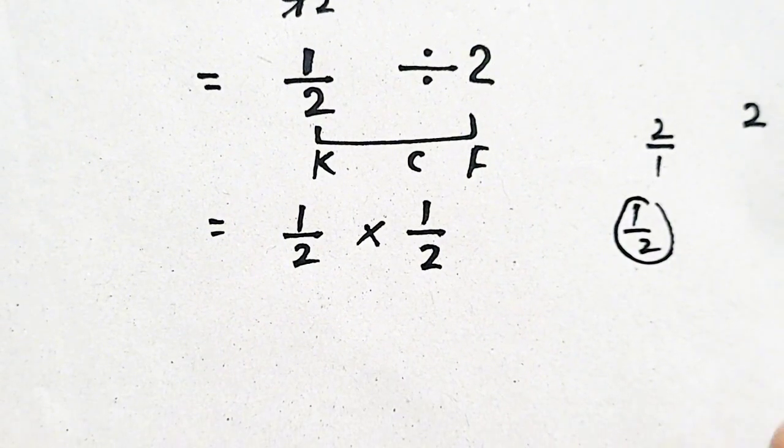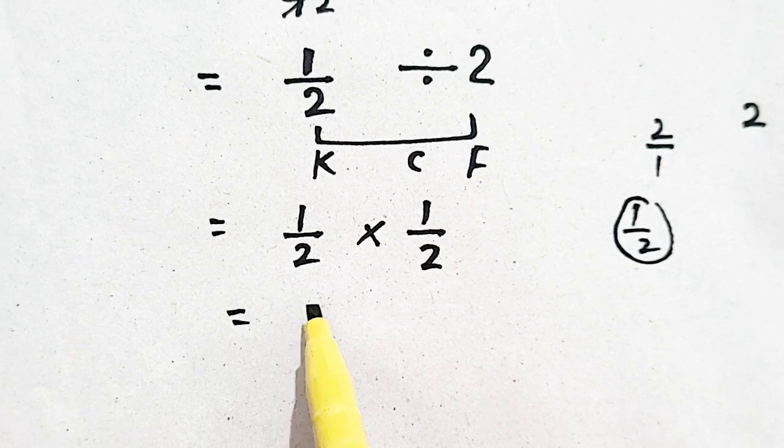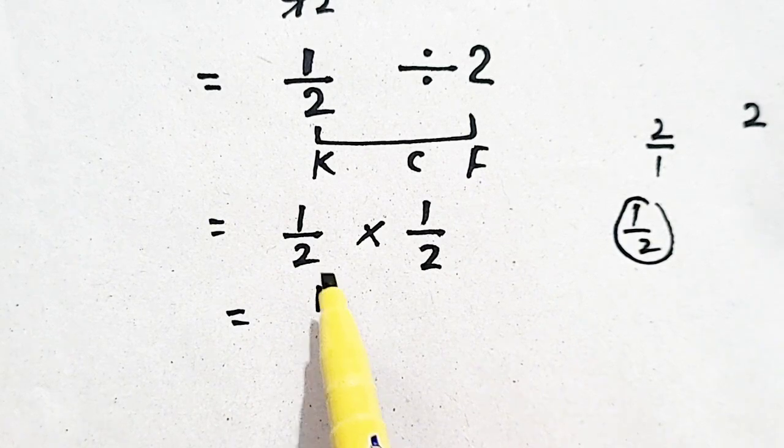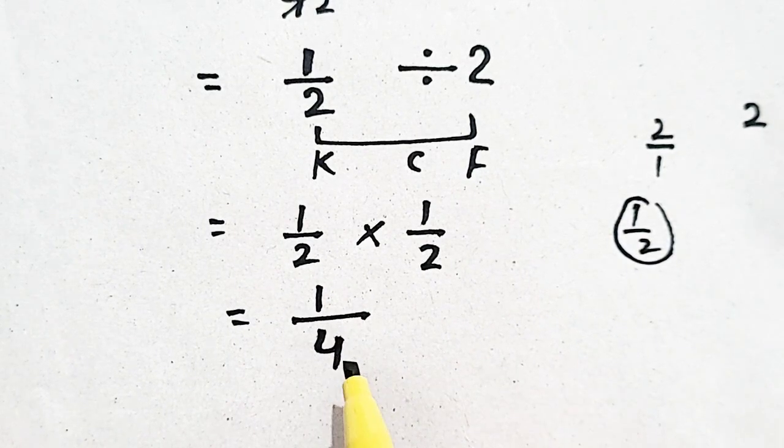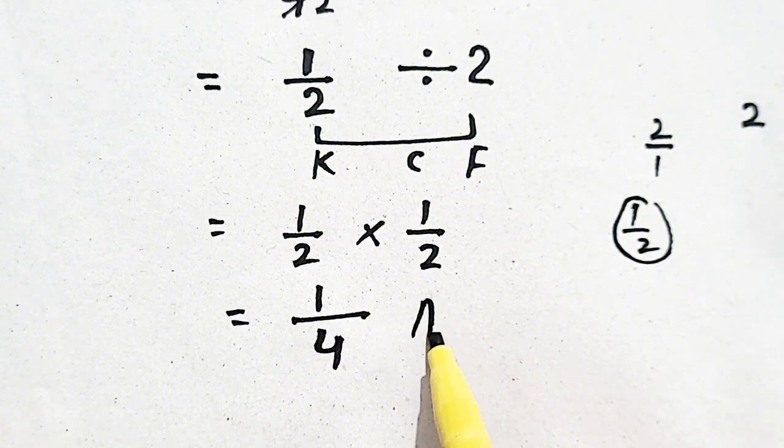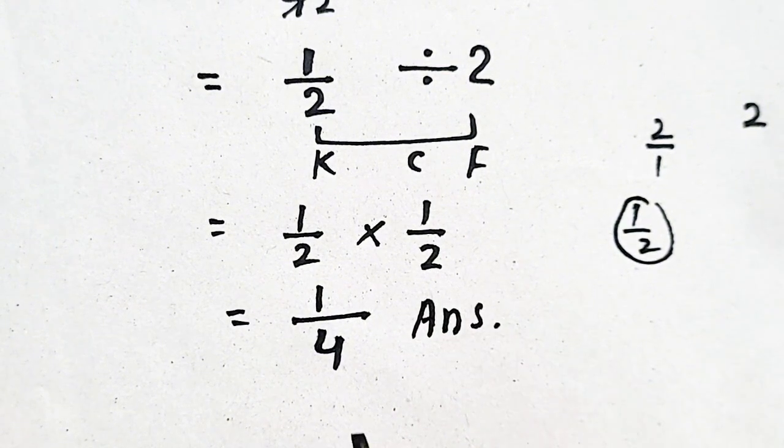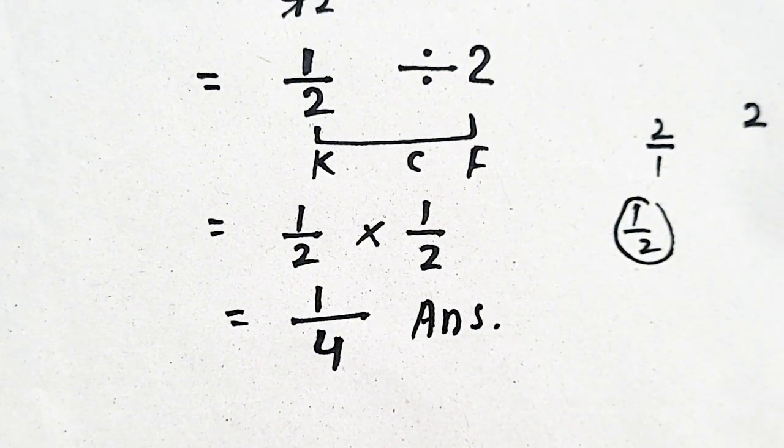So 1 times 1 will be equal to 1, and 2 times 2 will be equal to 4, which will be our answer. Thank you for watching my YouTube video.